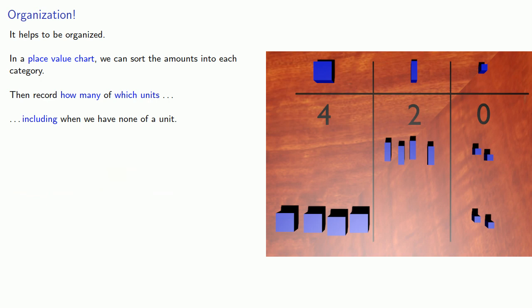In the second row, we have 4 of these, and 2 of these. So we'll write those amounts down. And we might indicate that we have 0 of these. But we usually omit leading 0s.